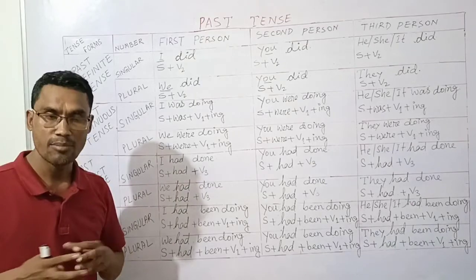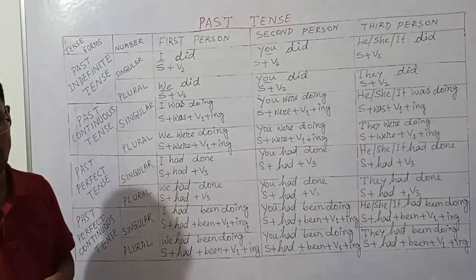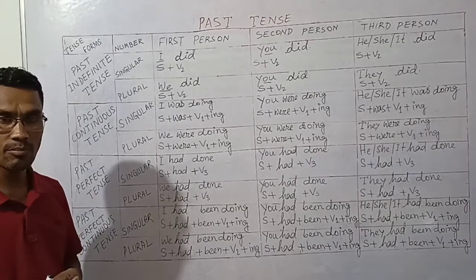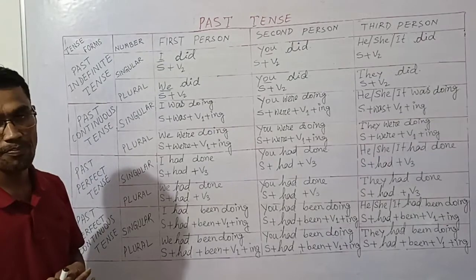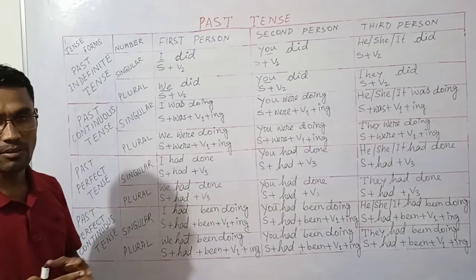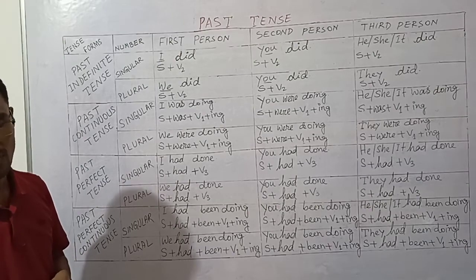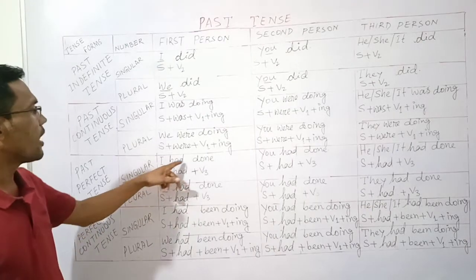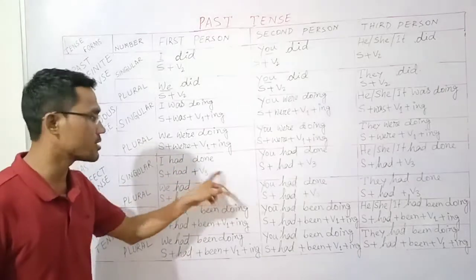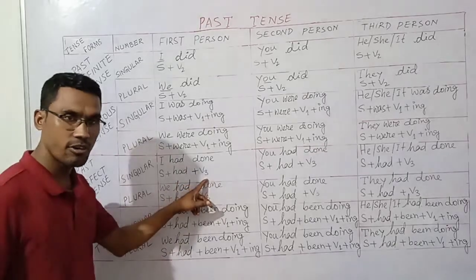Example: 'I had done my homework.' The auxiliary verb 'had' is followed by the third form of the verb — also called the past participle. So 'do' becomes 'done.' Perfect tenses — present perfect, past perfect, and future perfect — all use the third form.